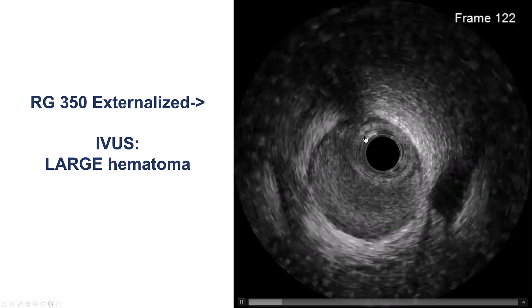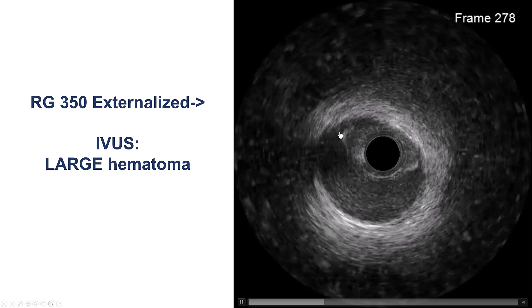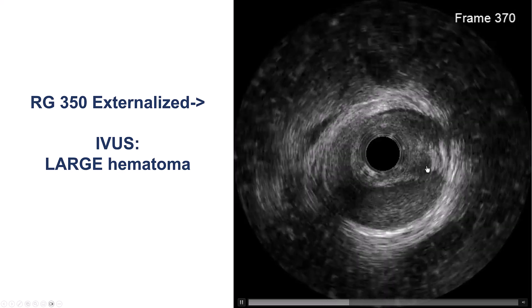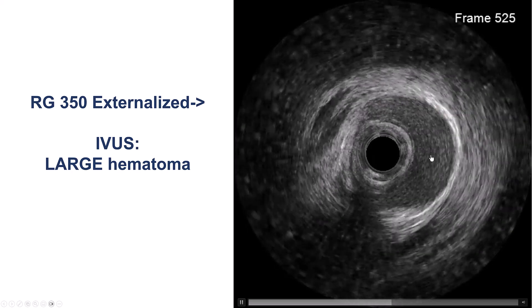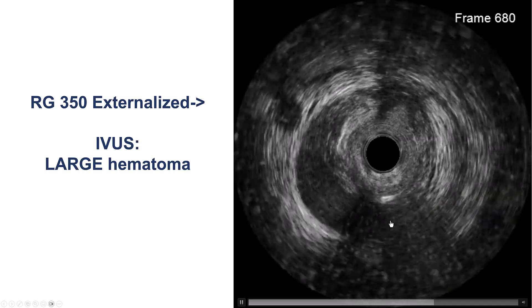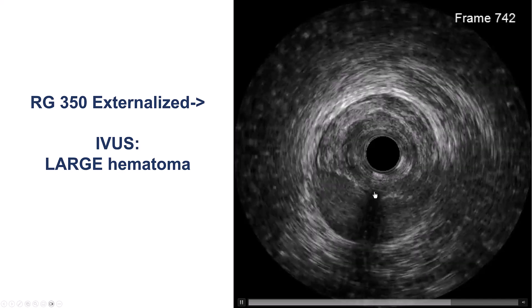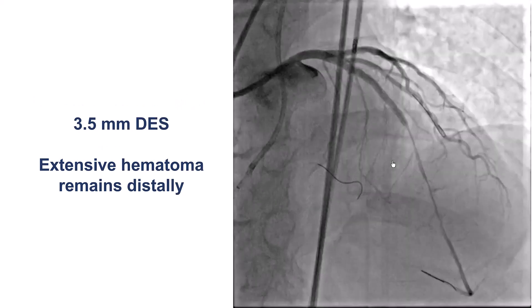We externalized with an RG3 350 wire and then performed IVUS, which revealed a very large hematoma. Unfortunately, all the antegrade and retrograde attempts resulted in a fairly large hematoma into the LAD — the LAD was literally swimming within a large extraplaque hematoma. We decided to stent in hopes that this would tack back the hematoma. It looked good in the stented segment, but the distal segment still appeared fairly compressed.